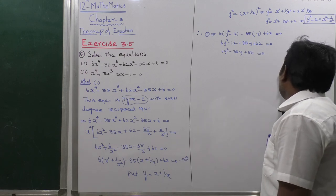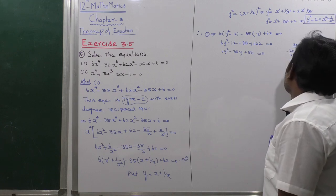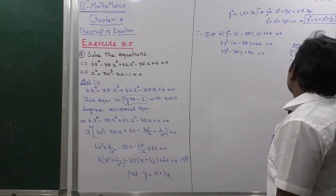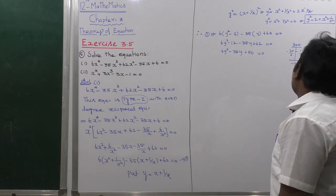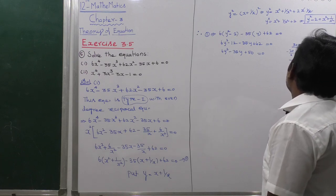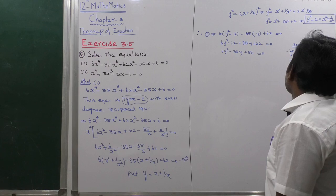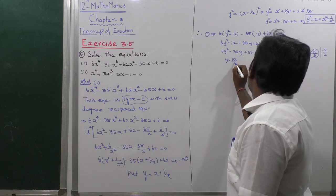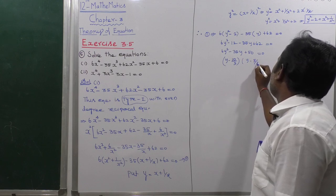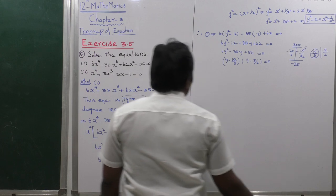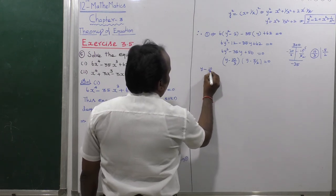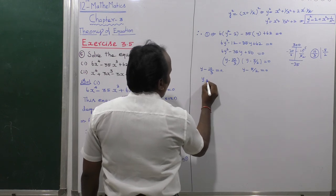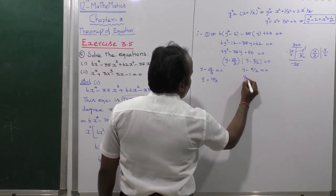Divided by 6, the first factor gives y minus 10/3, and the second factor gives y minus 5/2. So the factors are (y minus 10/3) = 0 and (y minus 5/2) = 0. Therefore y equals 10/3 or y equals 5/2.